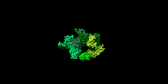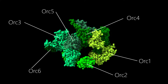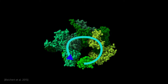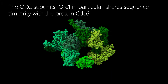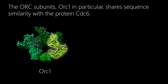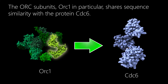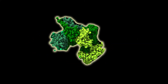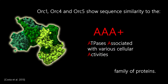The ORC complex is a hetero-hexameric protein complex composed of six distinct subunits. Subunits 1 to 5 form a ring-like structure through which double-stranded DNA can be threaded. ORC1 in particular shares sequence similarity with the protein CDC6. Subunits 1, 4, and 5 contain regions with high similarity to the AAA+, or ATPases Associated with various cellular Activities, family of proteins.